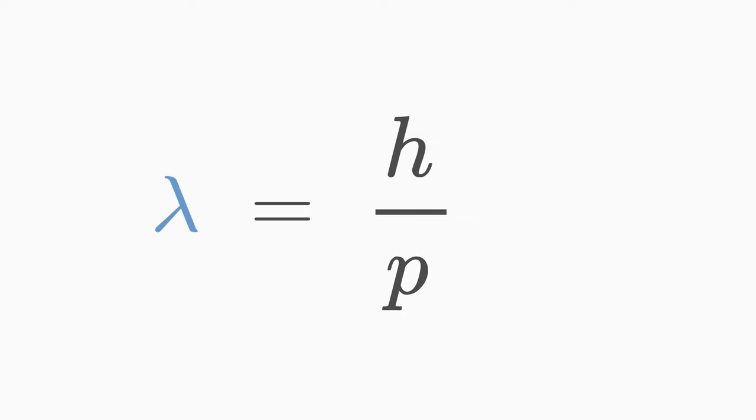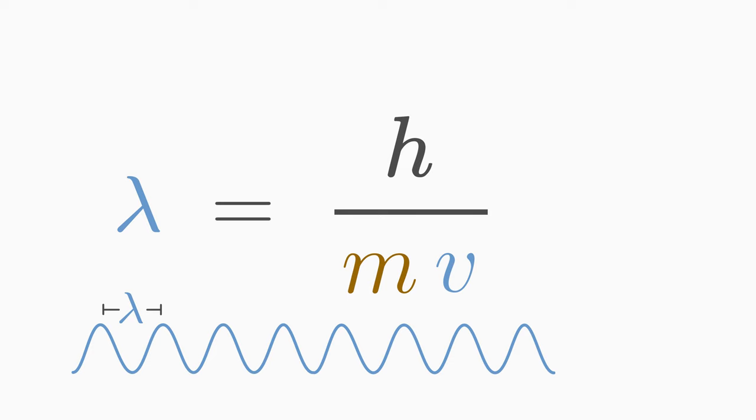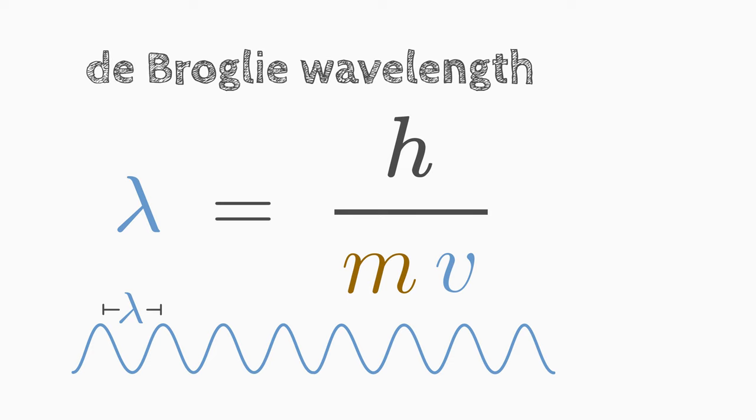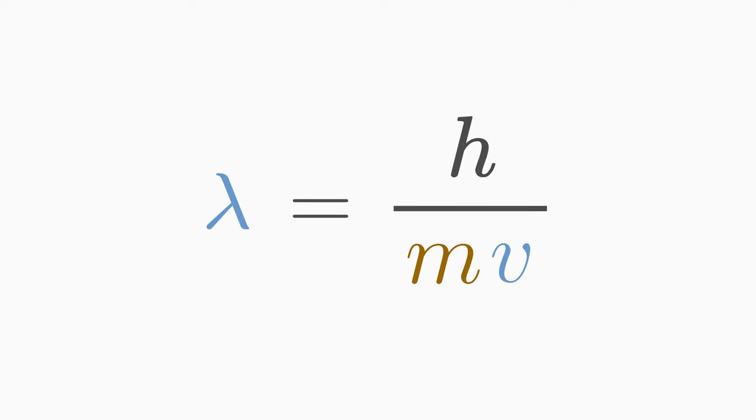The momentum p of a classical particle is defined as the product of its mass m and its velocity v. We insert m times v for momentum and interpret the wavelength lambda as the matter wavelength of a particle. It is also called de Broglie wavelength. Lambda is equal to h divided by m times v.